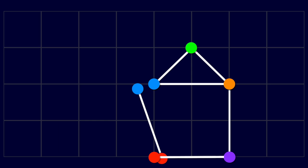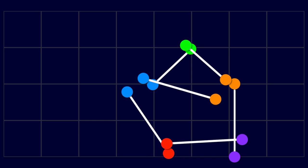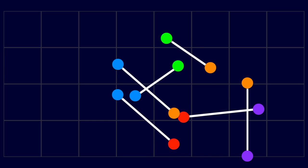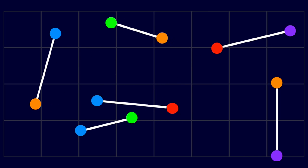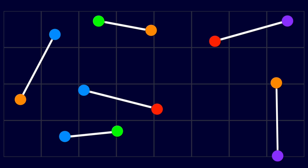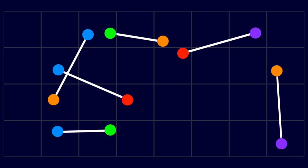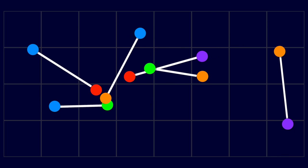Instead of starting by placing the points and then connecting the segments, we suppose that this time we have the segments and their lengths available at the start. The goal now is to find the position of each of the vertices, marked by the different colors, such that the lengths of all the segments are respected.